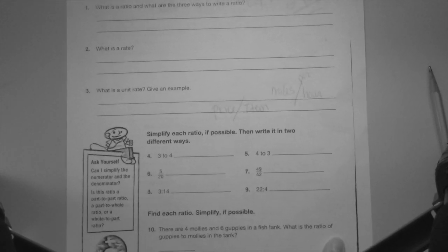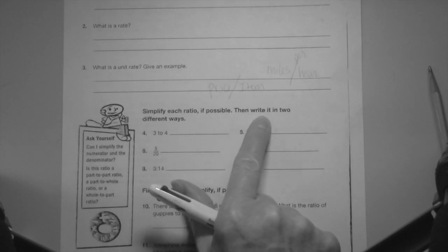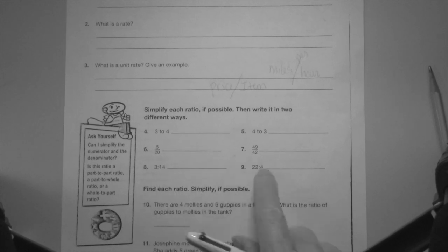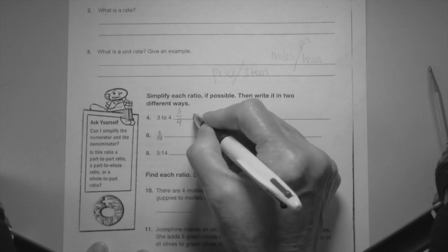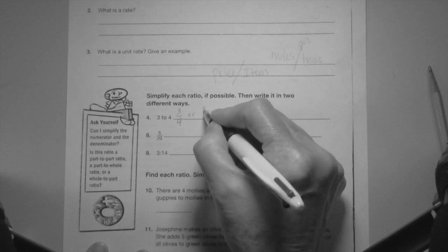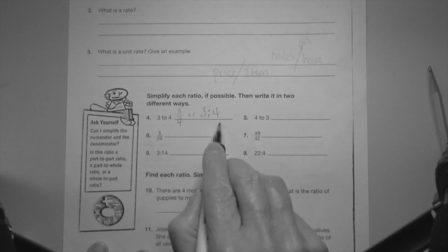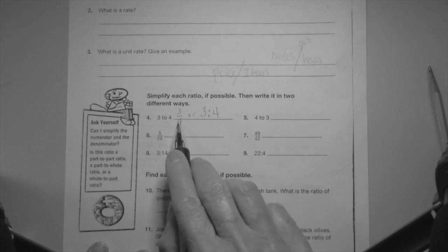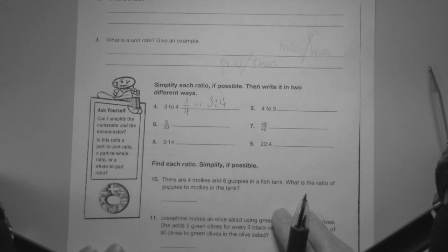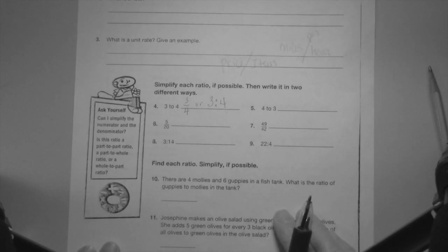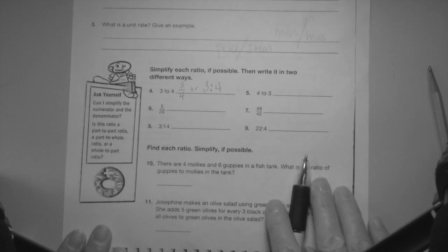Down here, simplify your ratio if possible then write it in two different ways. Three to four, this is three to four or three to four. The wording two, the fraction form, or colon. Can I simplify three over four? Nope, that's it. I want you to try those a little bit on your own and I will come back and do them with you in two seconds.